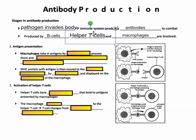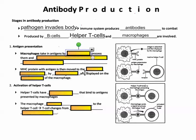Helper T cells are really important here. As I mentioned in the previous video, these get targeted by HIV, and after you understand the role of helper T cells you can see why HIV is so scary — why it reduces your immune system so badly and how you can develop AIDS.